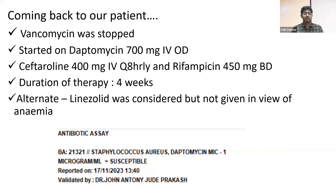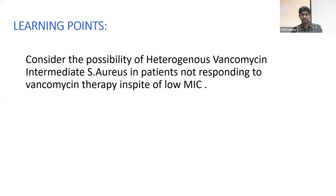Coming back to our patient, vancomycin was stopped. He was started on daptomycin 7mg IV OD and ceftaroline 400mg IV Q8H and rifampicin 450mg BD. After starting the combination therapy, fever spikes came down and he was stable. Duration of therapy continued for four weeks. Linezolid as an alternate to daptomycin was also considered, but not given in view of anemia. Antibiotic susceptibility was done for daptomycin with a minimum inhibitory concentration of 1. The learning point: consider the possibility of heterogeneous vancomycin intermediate Staphylococcus aureus in patients not responding to vancomycin therapy in spite of low minimum inhibitory concentration.